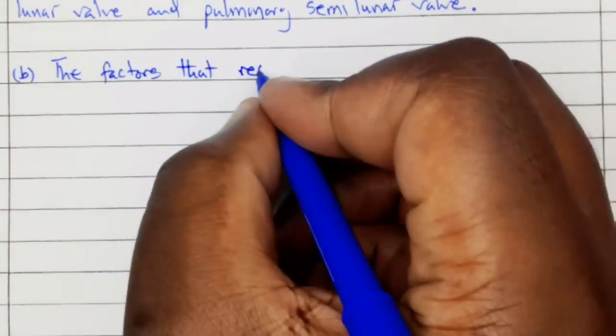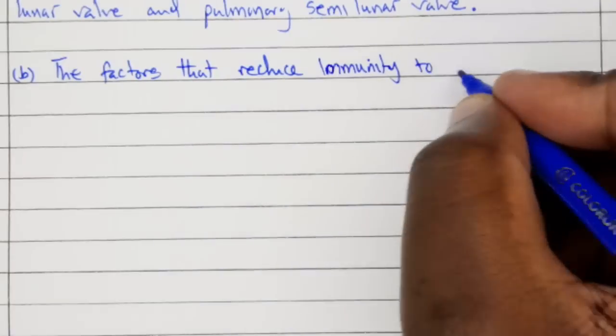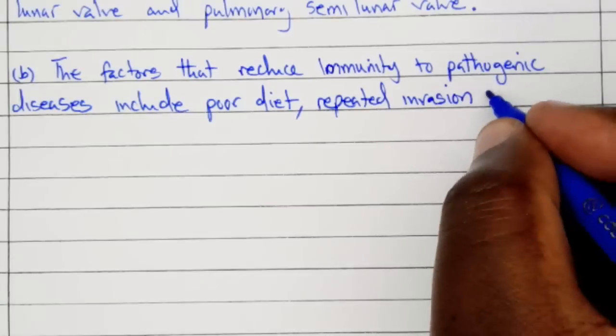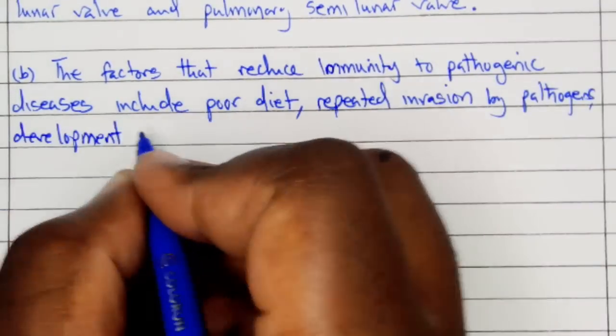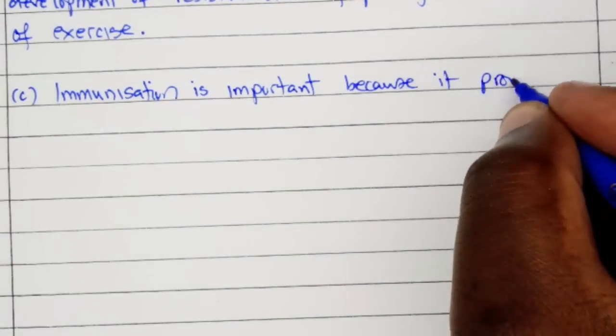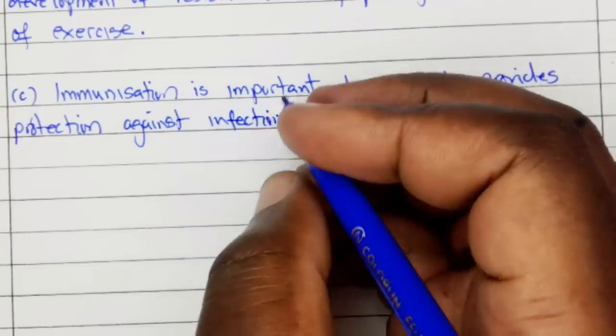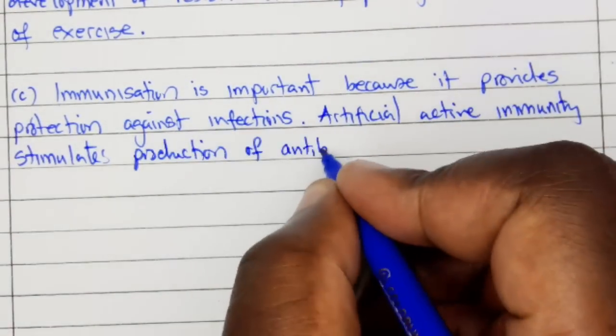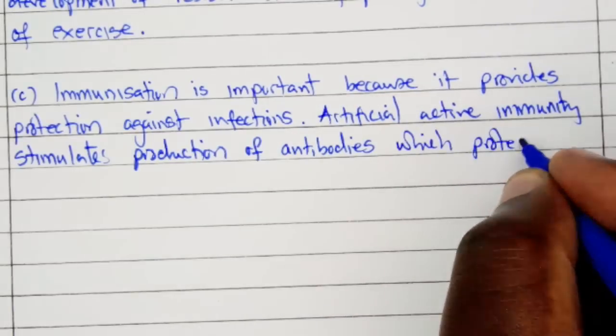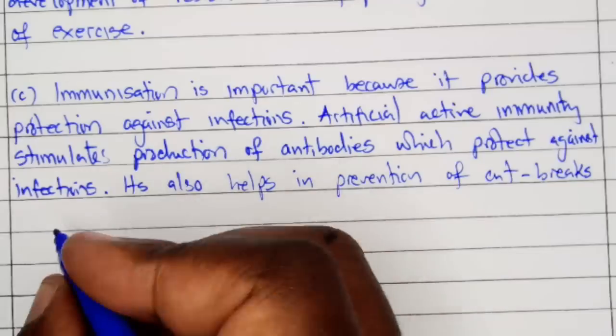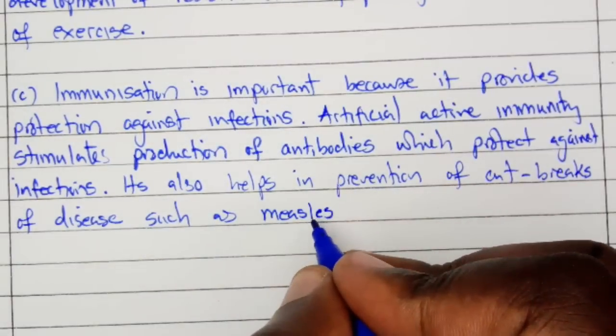Part B: The factors that reduce immunity to pathogenic diseases include poor diet, repeated invasion by pathogens, development of resistant strains of pathogens, and lack of exercise. Part C: Immunization is important because it provides protection against infections. Artificial active immunity stimulates production of antibodies which protect against infections. It also helps in prevention of outbreaks of diseases such as measles. These were the answers to question number 7.